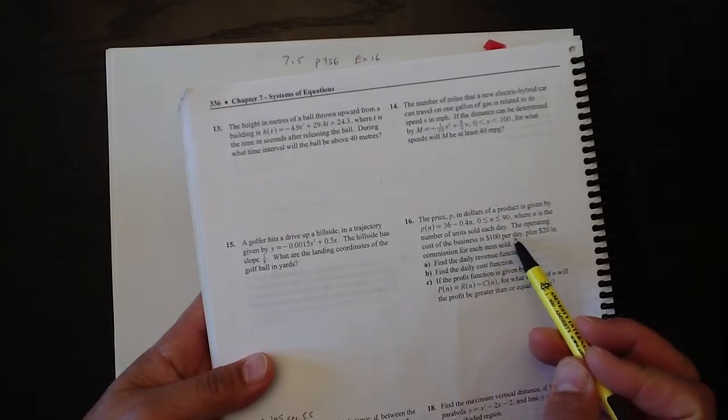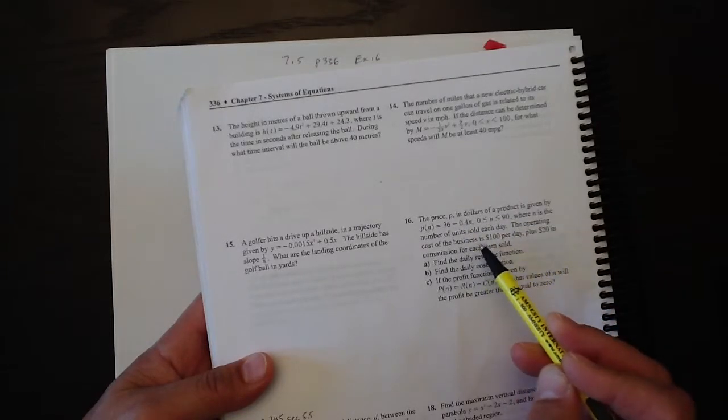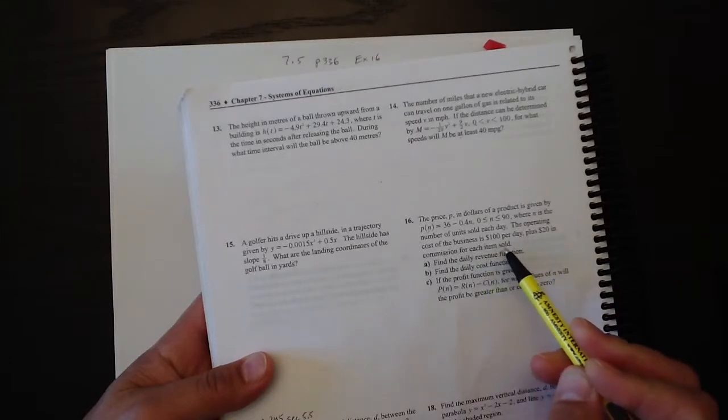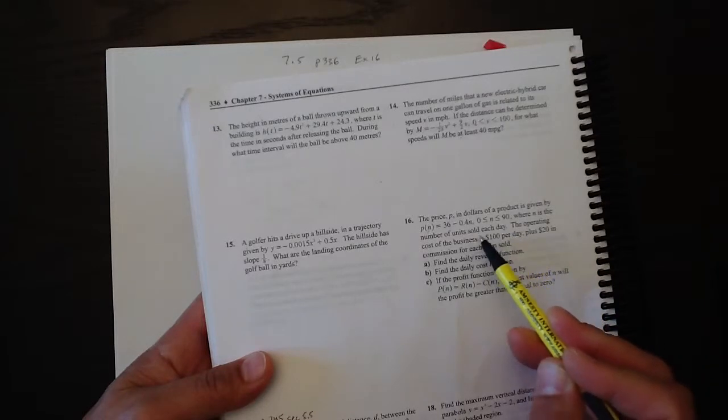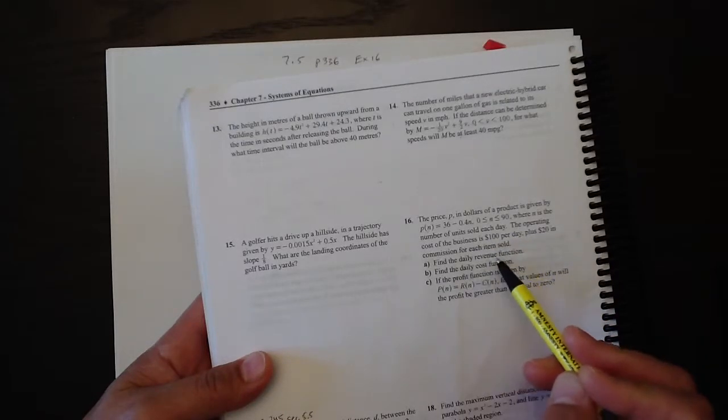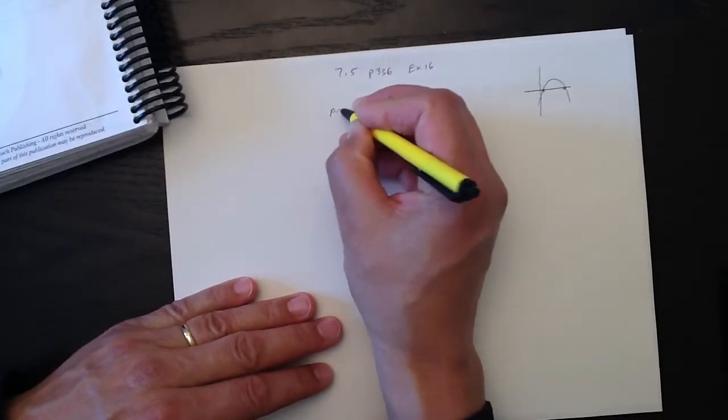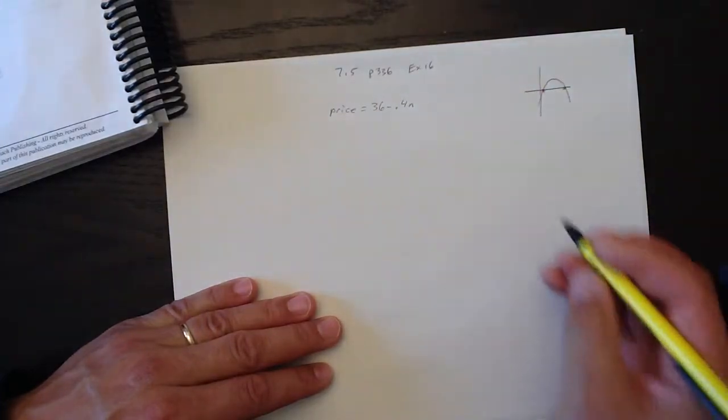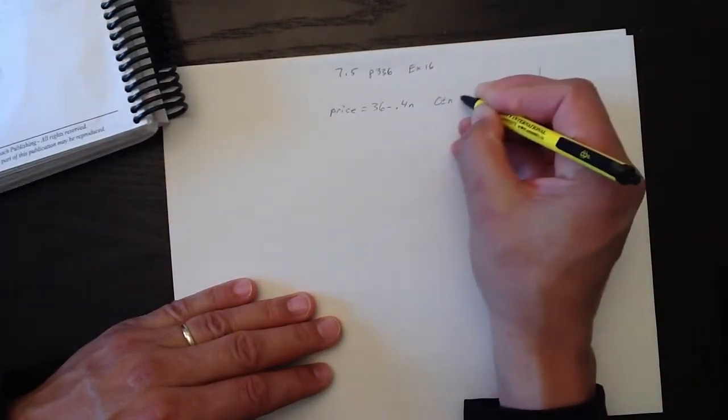The operating cost of the business is $100 per day, plus $20 in commission for each item sold. The operating cost is also a function of n, the number of units sold, but it's a different function. Let's write this price equals 36 minus 0.4n, and the restriction that n is between 0 and 90.